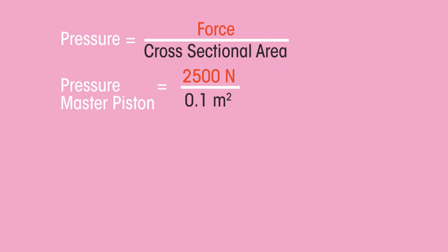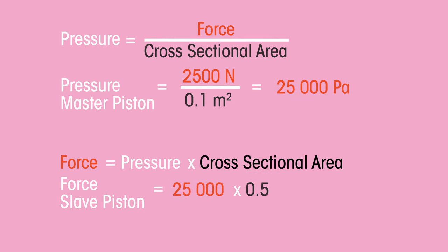So, the pressure produced by the master piston is 25,000 pascals. And so, the force produced by the slave piston is 25,000 times 0.5m², giving 12,500 newtons. That's a massive increase in force from the original 2,500 newtons applied to the master piston to the 12,500 newtons produced by the slave piston.